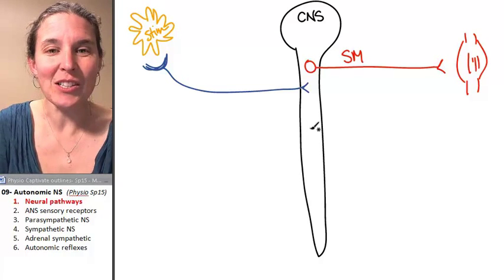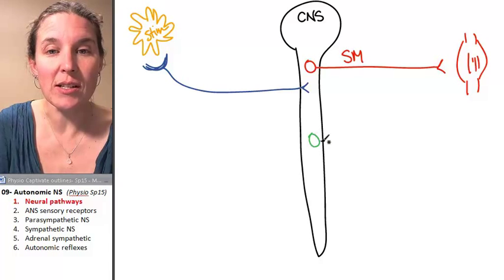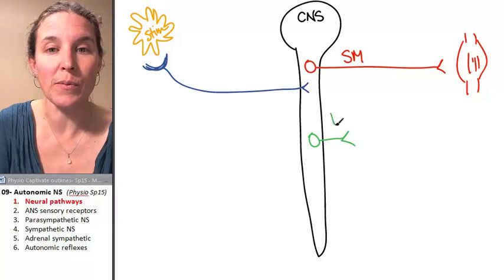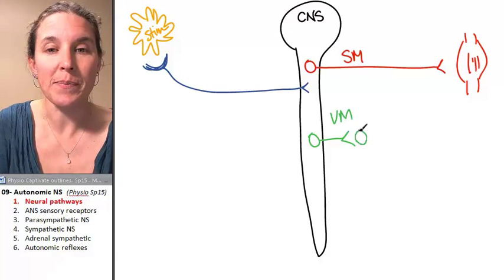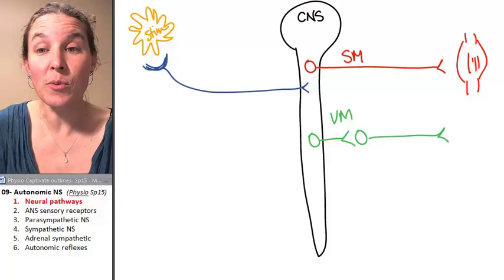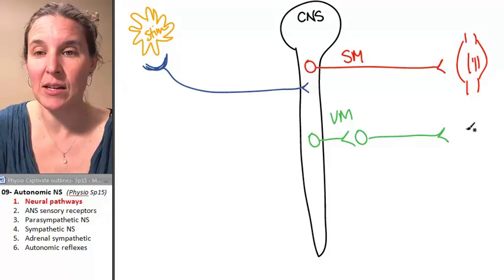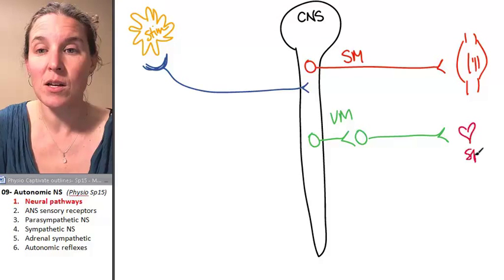Today we're going to look at two different branches of the visceral motor pathway. And all visceral motor pathways, as we know, innervate either cardiac muscle, smooth muscle, or glands.